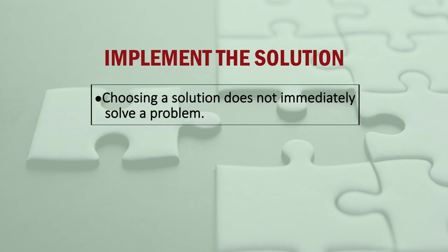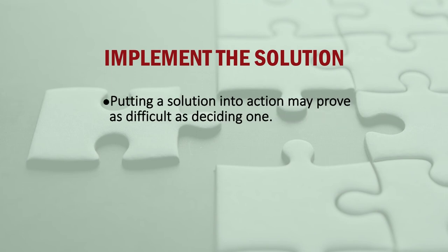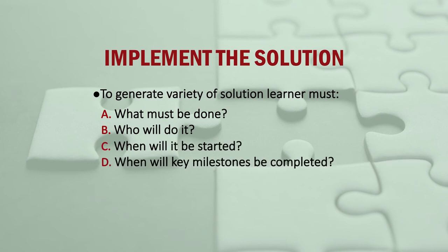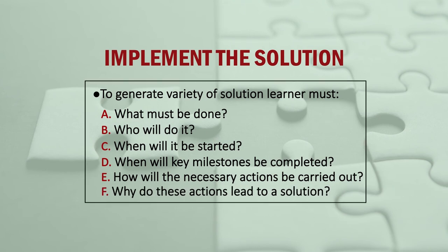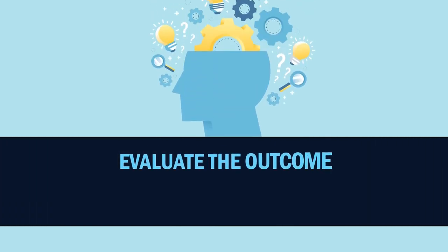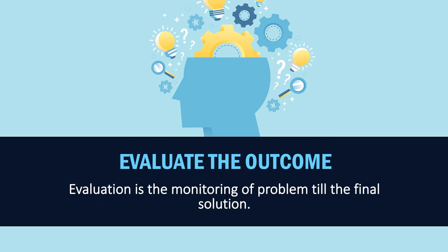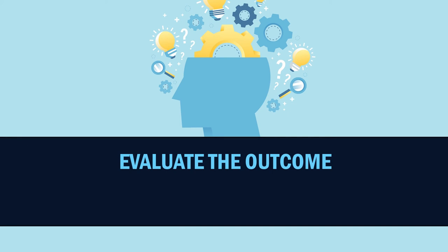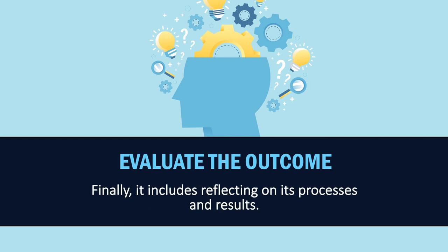Choosing a solution does not mean that you have solved the problem, because you have only identified a tentative solution. You put the solution into action, which may sometimes prove difficult. When you implement the solution, you need an action plan covering: what needs to be done, who will do it, when the key milestones will be completed, how the necessary actions will be carried out, and why these actions lead to a solution. Then you evaluate the outcome. Evaluation is the monitoring of the problem until the final solution; you may use additional feedback mechanisms to detect the need for mid-course corrections, ensure the problem is solved without creating new problems, collect data, report what has been accomplished, and reflect on its processes and results.